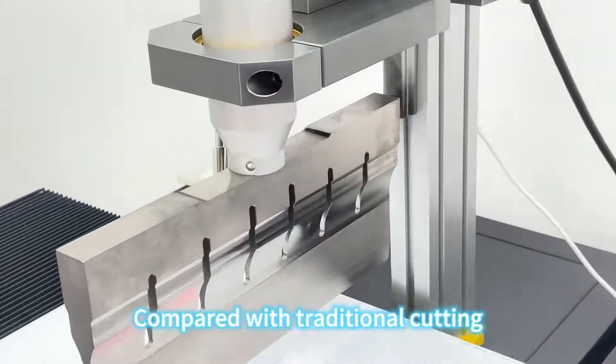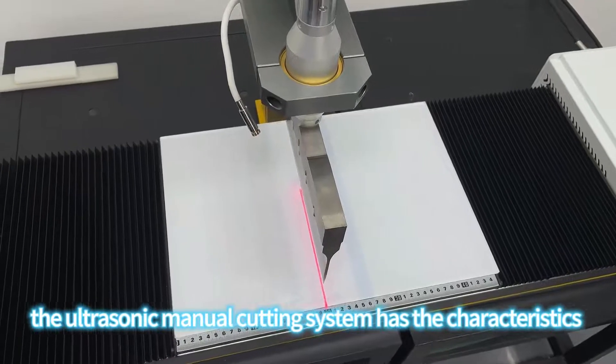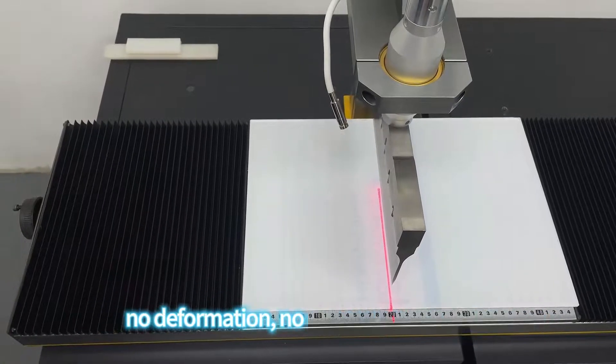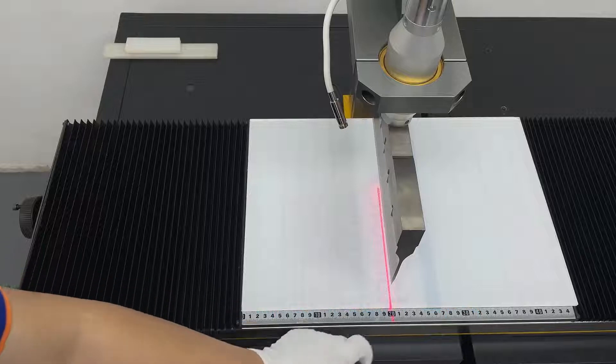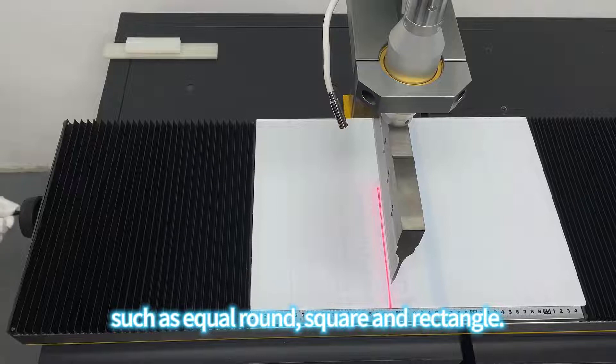Compared with traditional cutting, the ultrasonic manual cutting system has the characteristics of delicate incision, no chips, no sticking knife, no deformation, no cross-covering, and supports different cutting modes such as equal round, square and rectangle.